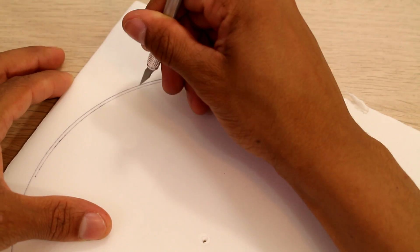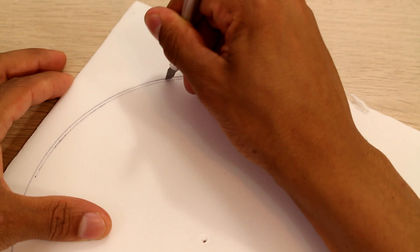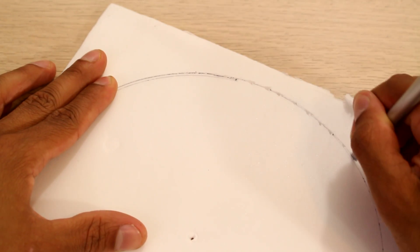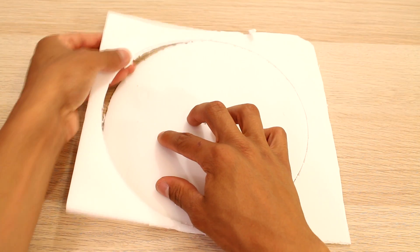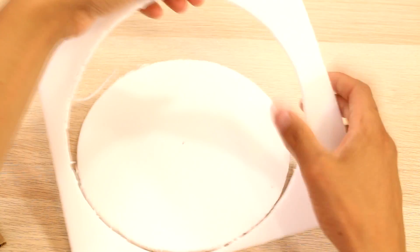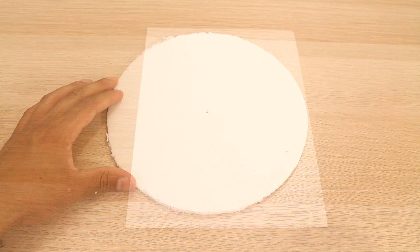Once I have it all drawn out we can go ahead and just quickly cut out the shape of our base. Now that that's done we can pop it out and as you can see this is a perfect circle.